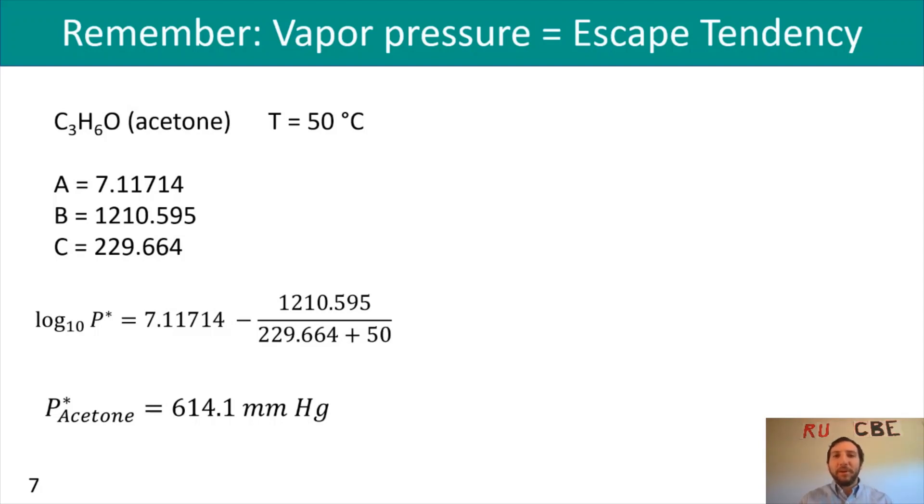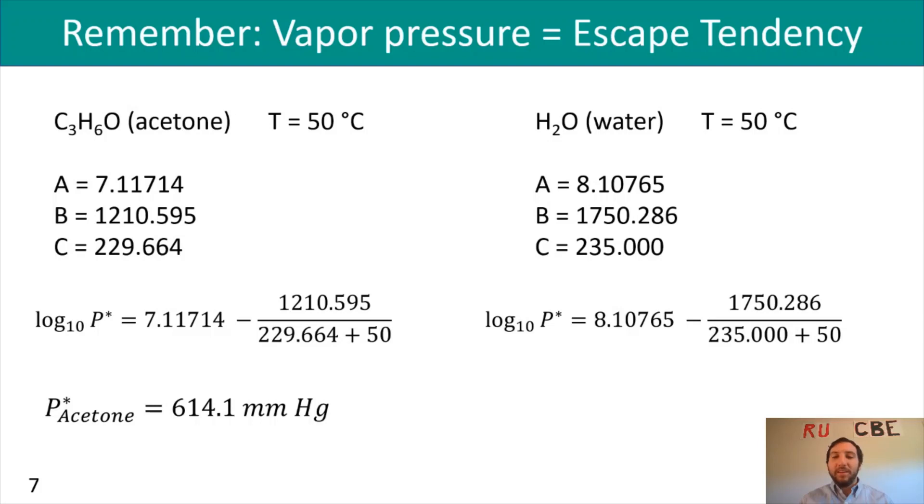That's our vapor pressure for acetone. We can also do this calculation for other compounds, such as water. Water has a different set of constants—actually two sets depending on what temperature range you're in. Always pay attention to the temperature for water to make sure you have the right constants. Again, we can substitute our A, B, and C values into the Antoine equation. At T = 50°C, P* for water is 92.6 mm Hg.